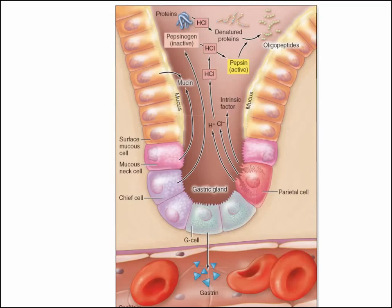The parietal cells secrete hydrochloric acid as well as intrinsic factor. They have to secrete the hydrogen and the chloride separately; otherwise, hydrochloric acid inside the parietal cell would destroy its contents. The chief cells primarily secrete pepsinogen, which is activated by hydrochloric acid to become the active form pepsin. Pepsin is what denatures and digests proteins.